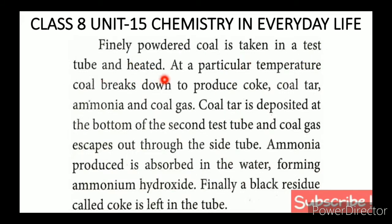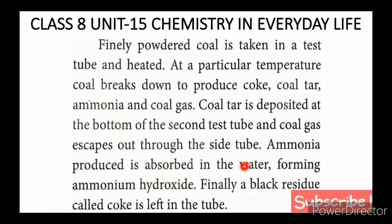Powdered coal is taken in a test tube and heated. At a particular temperature, coal breaks down to produce coke, coal tar, ammonia, and coal gas. The coal tar is deposited at the bottom of the second test tube, and the coal gas escapes out through the side tube. Ammonia gas dissolves in water, forming ammonium hydroxide. Finally, the black residue called coke is left in the first tube.